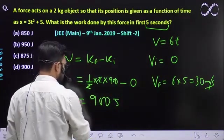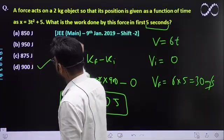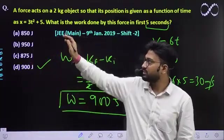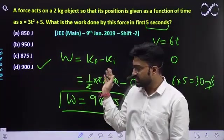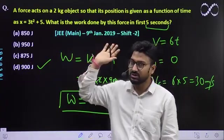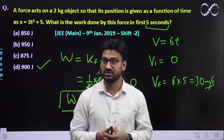So this is the work done we are getting. Option D would be the correct option. You just need to find velocity from displacement, then calculate change in kinetic energy. That would be the work done by the external force. I hope this question is clear to everyone. Thank you.